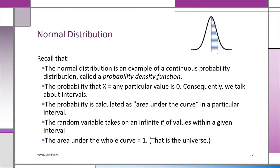We talk about the probability as the area under the curve. If we're looking at the probability that the random variable will take on a value in a given interval, say between zero and one, we get the area under the curve in that interval — which is a definite integral — then divide by the total area under the entire curve, and we get the proportion of times the random variable takes on a value inside that interval. A proportion equals a probability, and that's how we get our probability.